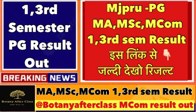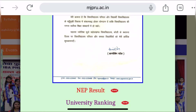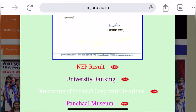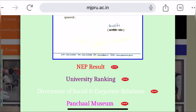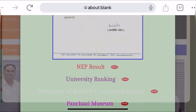Go straight from there — you'll be looking at Google. You'll see the link here. I'll show you MGPRO.ac.in. You'll see this interface, and there you go to the NEP result. If you want BA, BCOM, BSC, or any stream or student — MMSC, MCOM, any student — you'll see the result from MGPRO.ac.